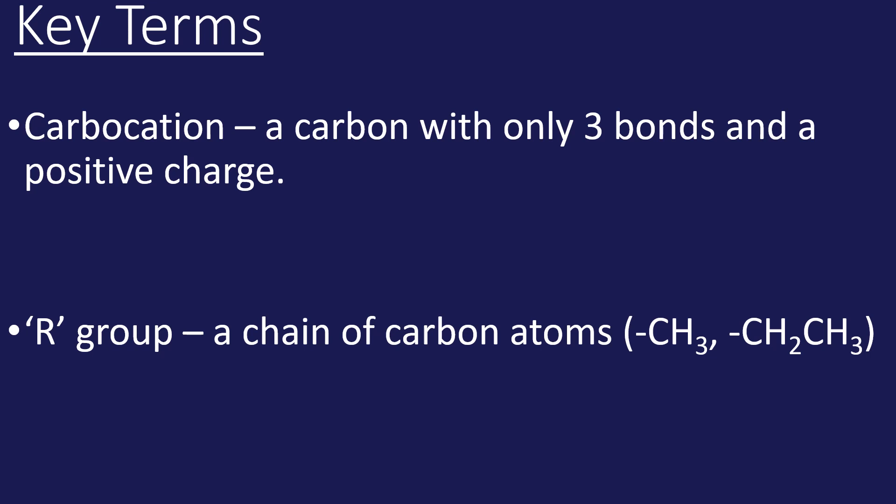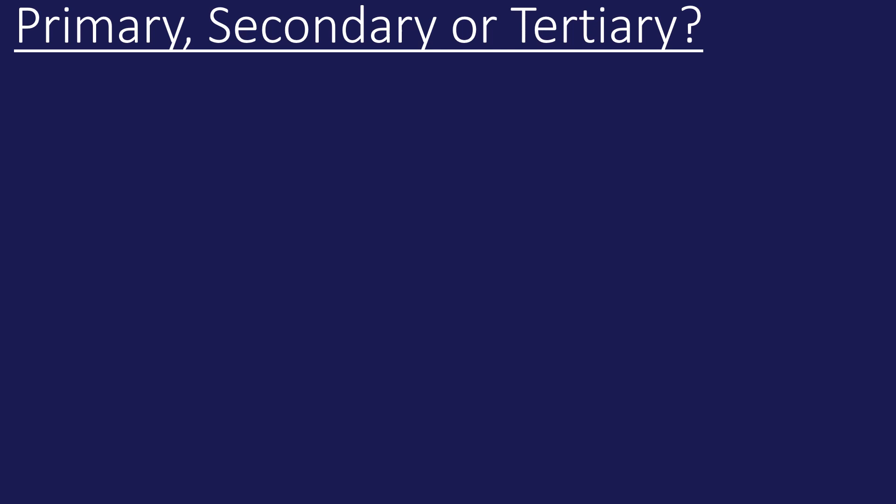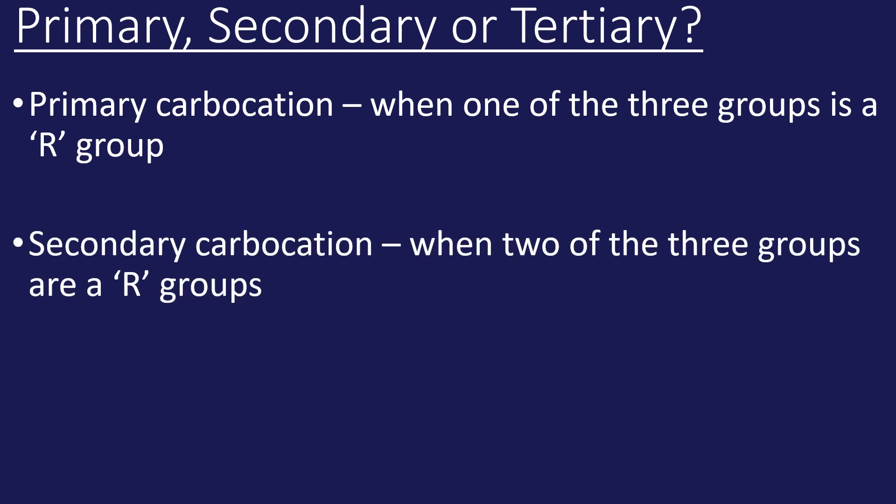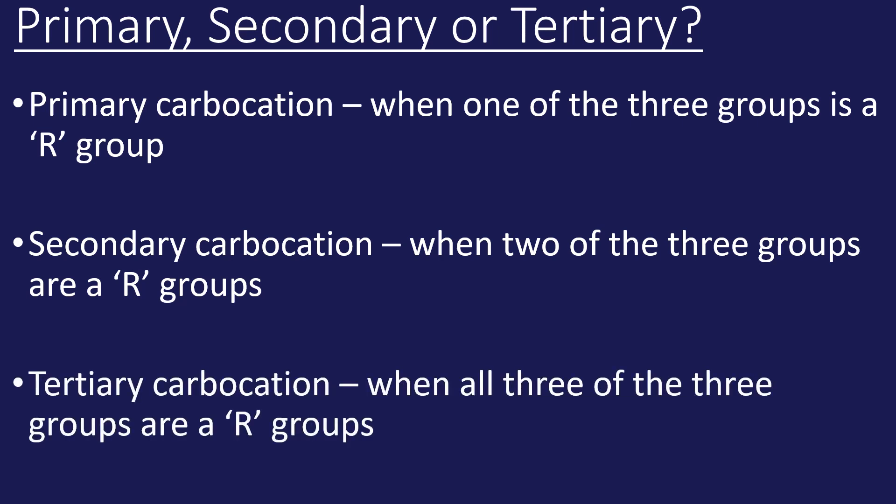A primary carbocation is when one of those three bonds is bonded to an R group and the other two are not. When two of those groups are R groups we call it a secondary carbocation, and when all three of them are R groups then it's a tertiary carbocation.